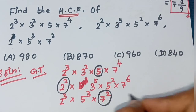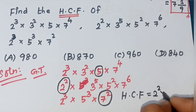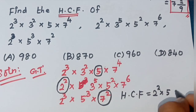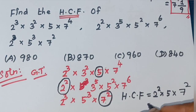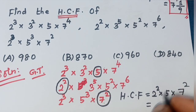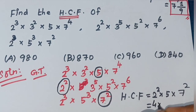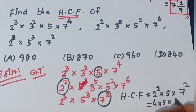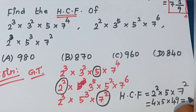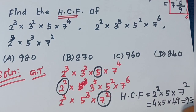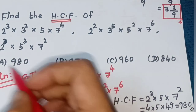Therefore HCF = 2² × 5 × 7² = 4 × 5 × 49 = 980. The final answer is 980, option A.